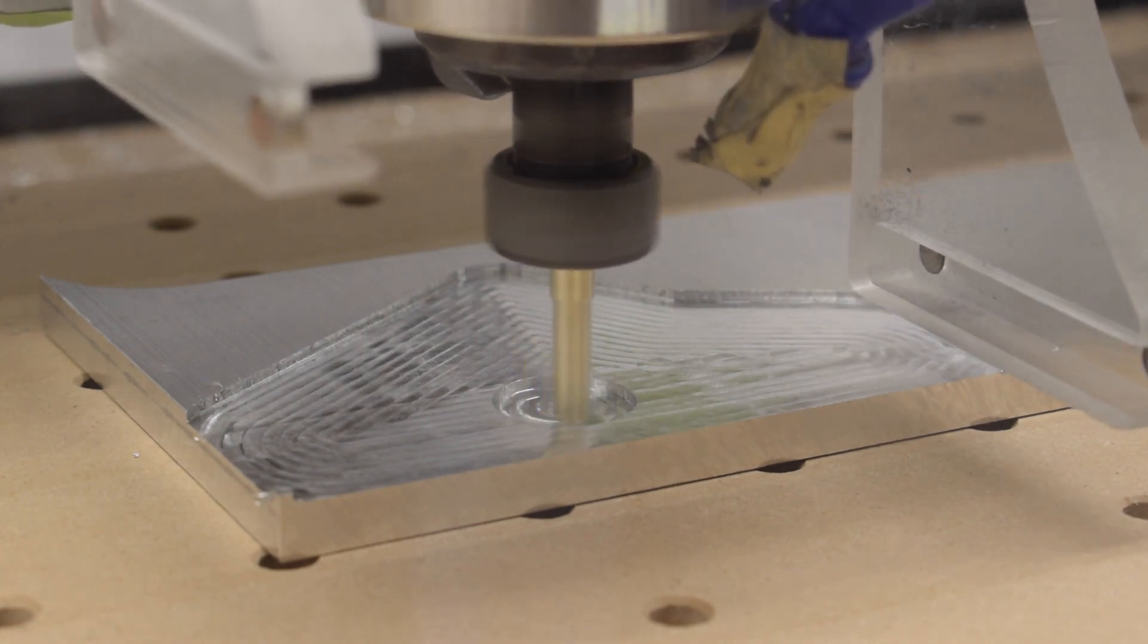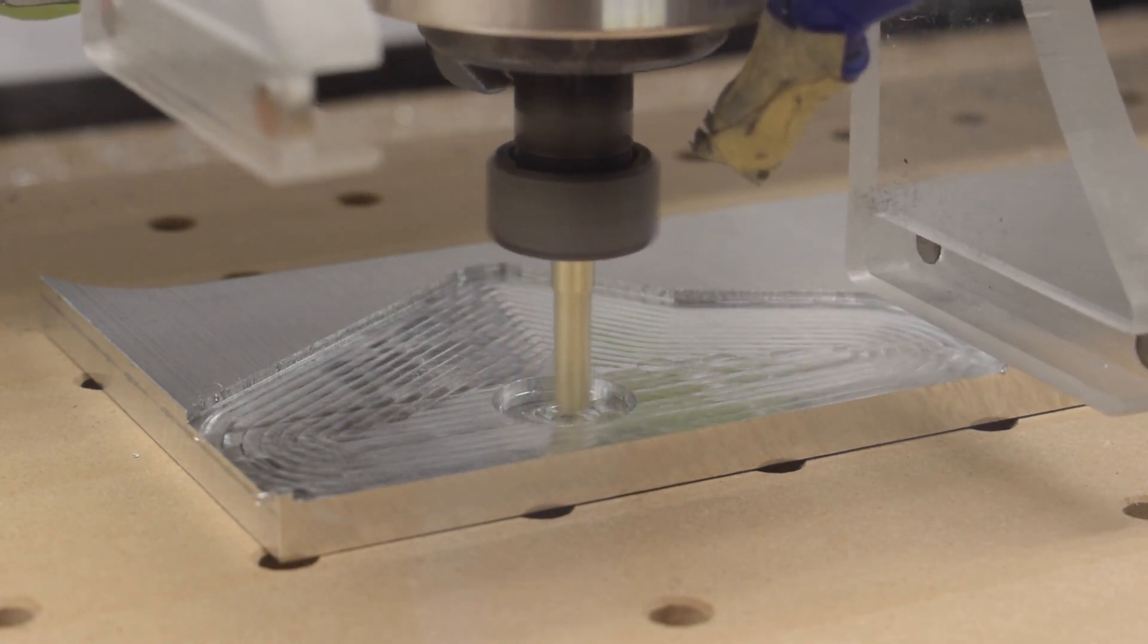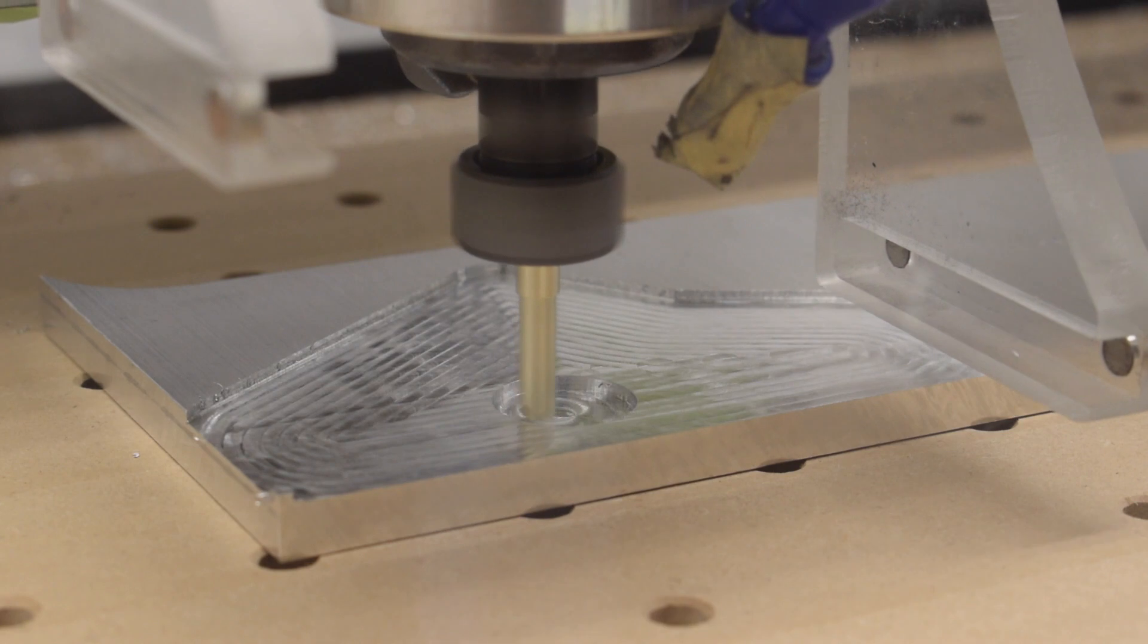With all that said, here are some recipes for my favorite tool for hogging out aluminum on the Shapeoko: The 278Z coated quarter inch single flute end mill.